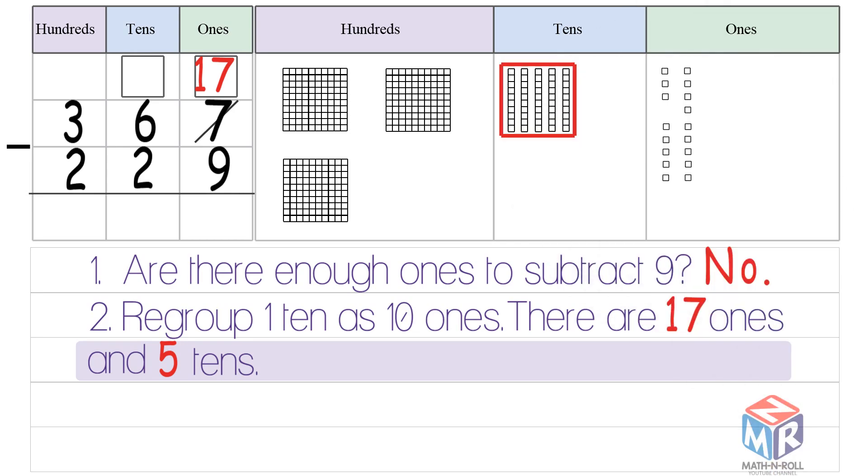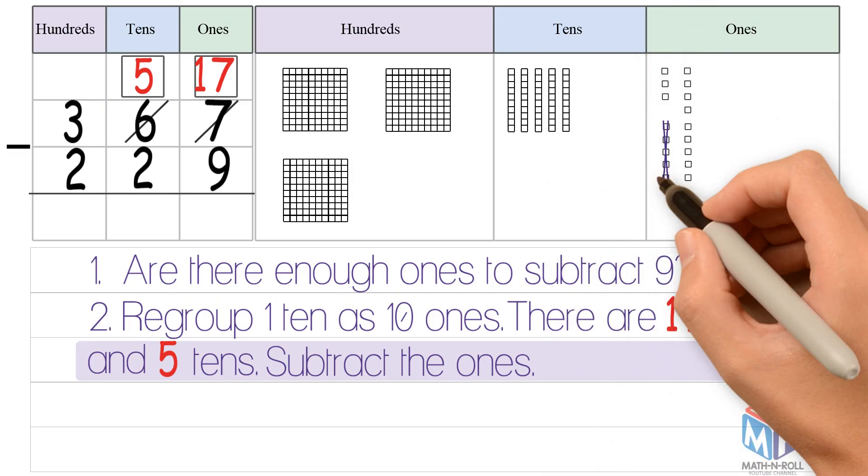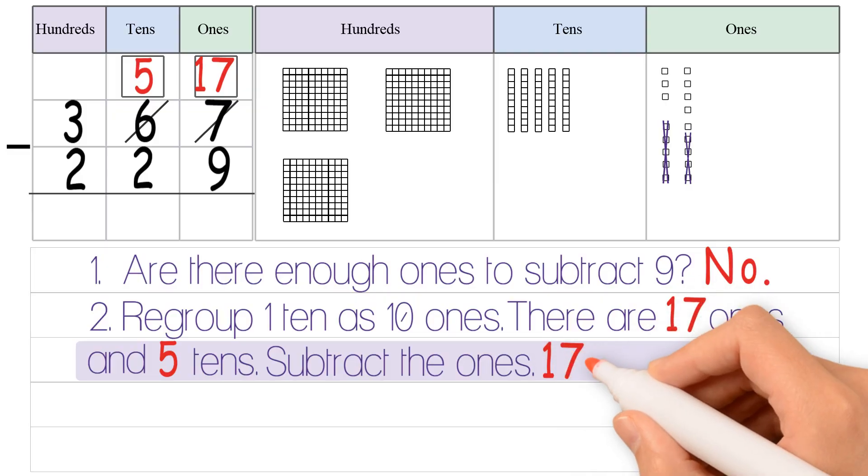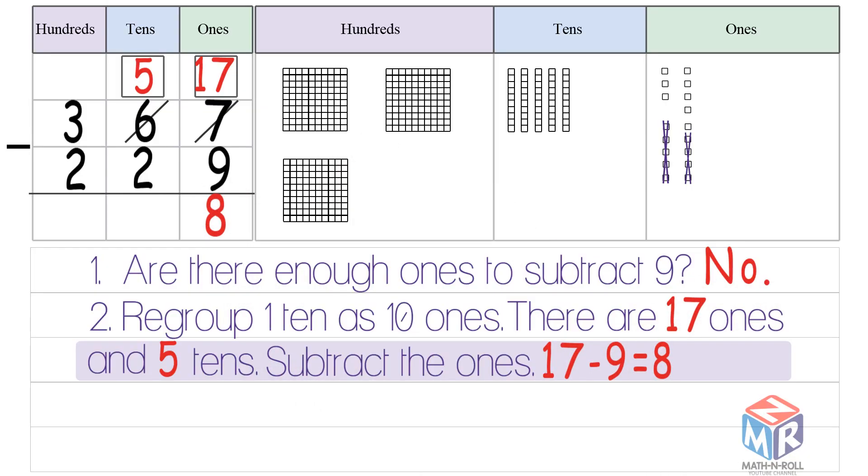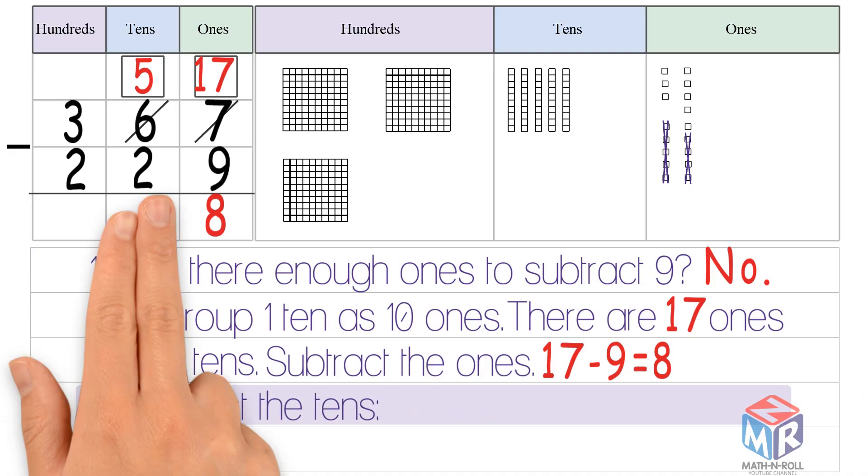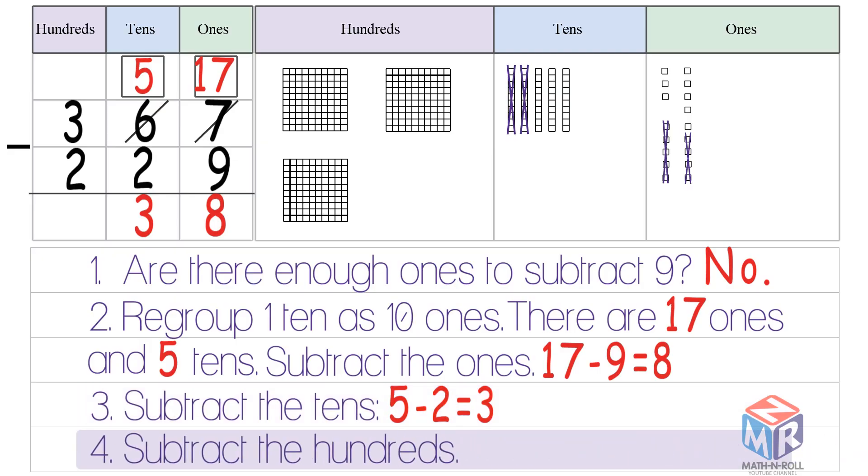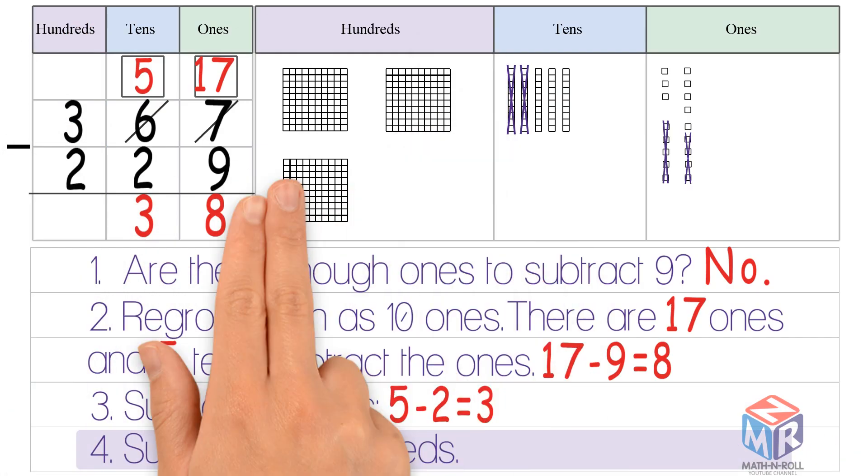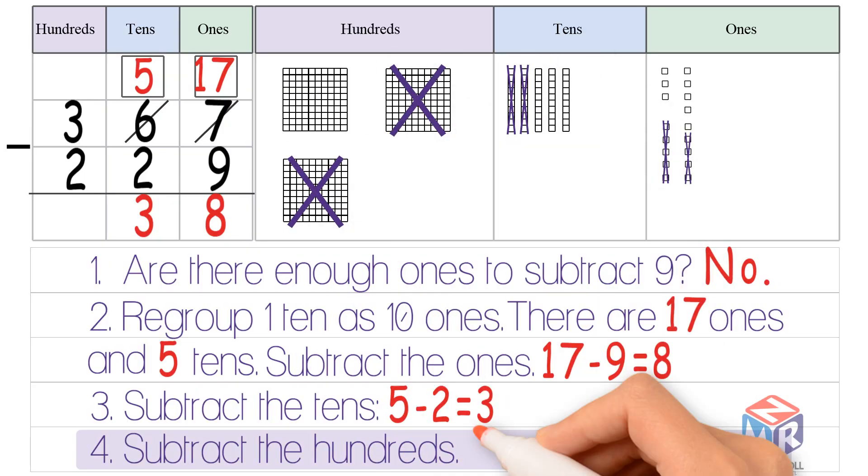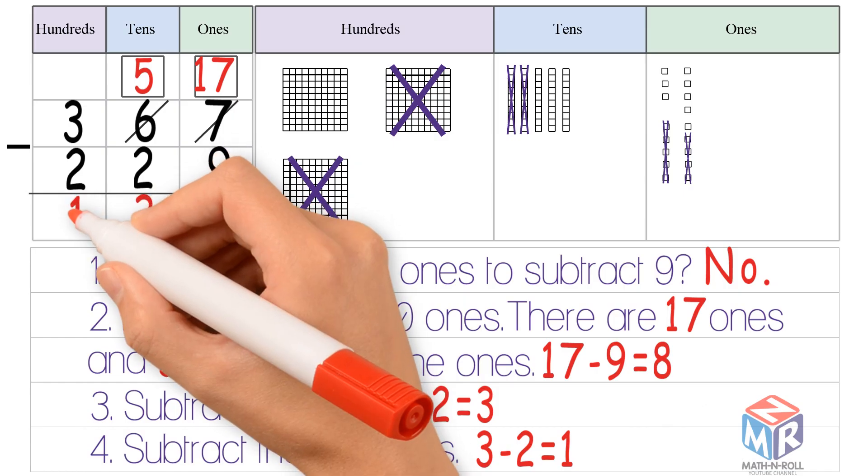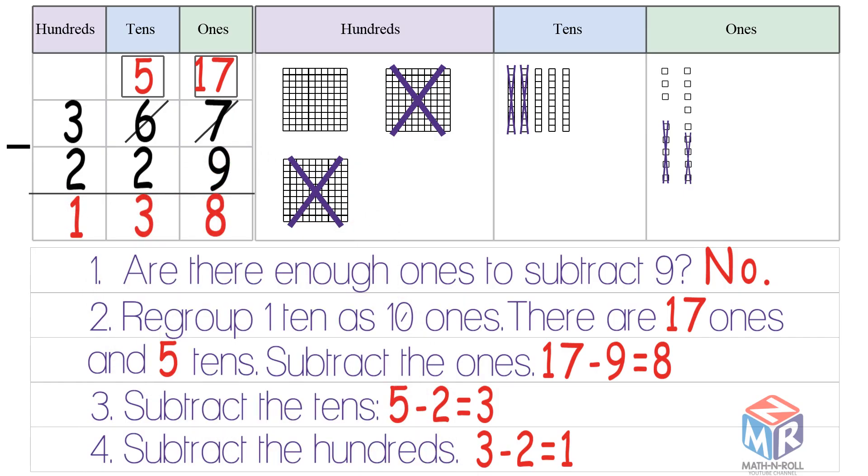We have 5 tens left over. Now, we subtract the ones. 17 minus 9 is equal to 8. Now, we subtract the tens. 5 minus 2 is equal to 3. Finally, we subtract the hundreds. 3 minus 2 is equal to 1. So 367 minus 229 is equal to 138.